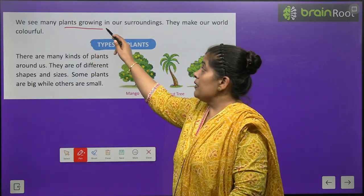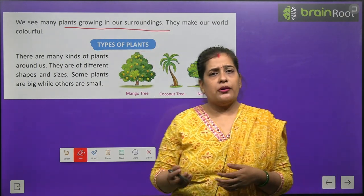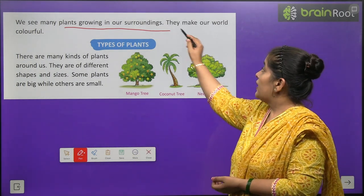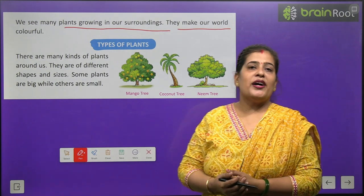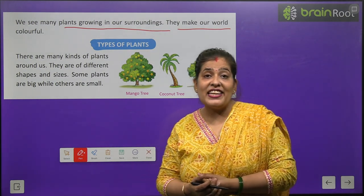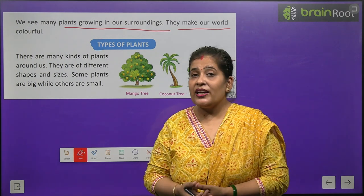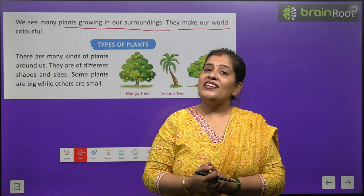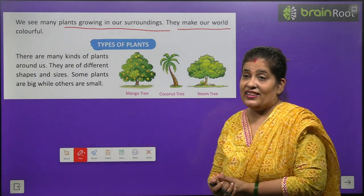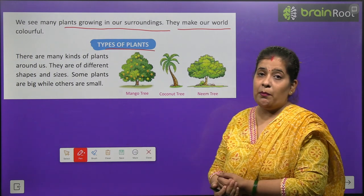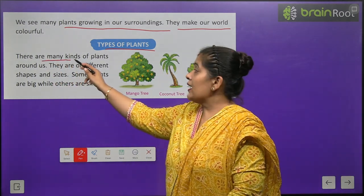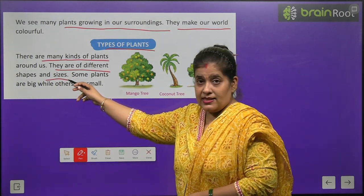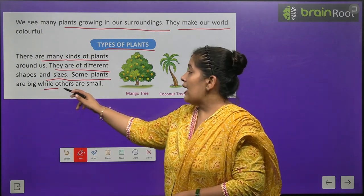We see many plants growing in our surroundings. There are many kinds of plants around us. They are of different shapes and sizes. Some plants are big while others are small.